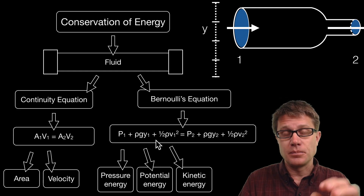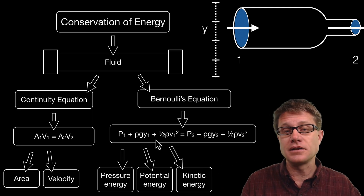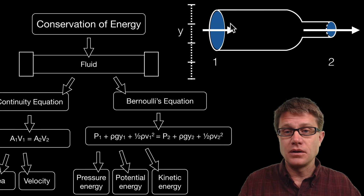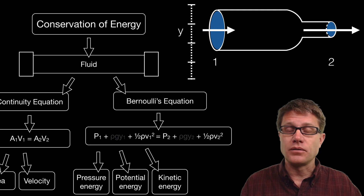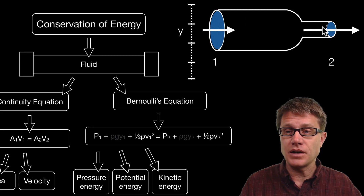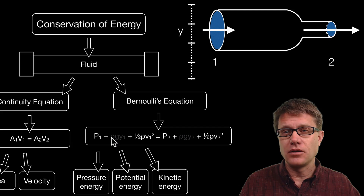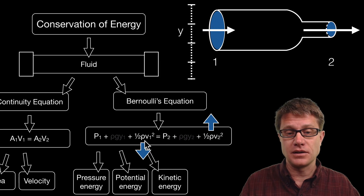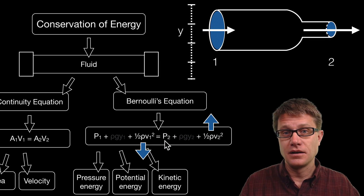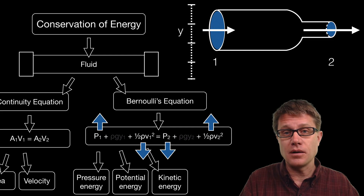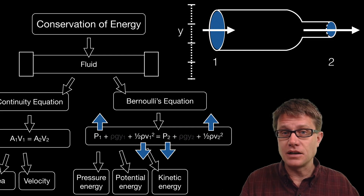The three energy forms are: the pressure of the fluid, the potential energy based on height relative to gravity, and the kinetic energy based on the speed of the fluid. Since this is conservation of energy, if we know the energy at one point in the pipe, we know it must equal the energy at the other point. For example, in a pipe where both sides have the same height, the velocity is faster on the right side, so to conserve energy the pressure on the right side must be lower — just like in the dock example where fast-moving fluid has lower pressure.